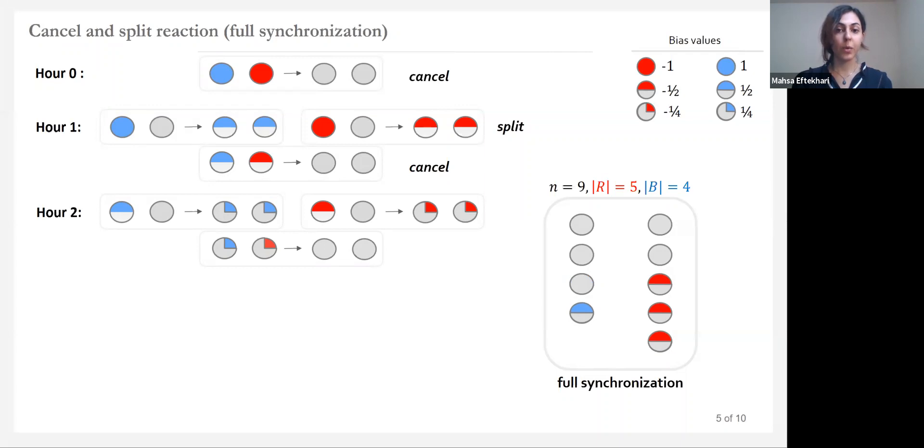Thus, at the end of hour one, the agent's bias value will become one-half, and by the end of hour two, the agent's bias value will be one-fourth. In general, by the end of hour i, the agent's bias value will be one over two to the i. In a fully synchronized protocol, by waiting log n time in each hour, with high probability, most agents cancel and all agents will have a chance to split exactly once. Thus, eventually, the red agents consume the blue ones, and population converge to the majority.